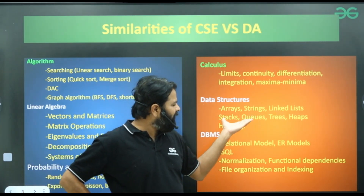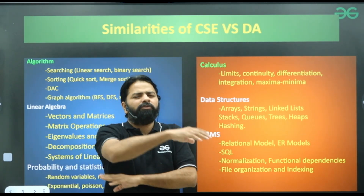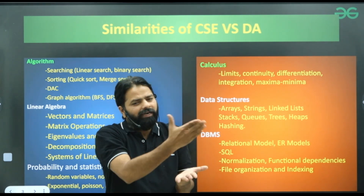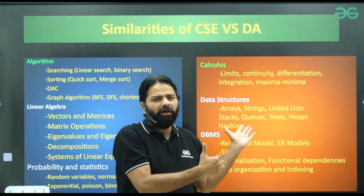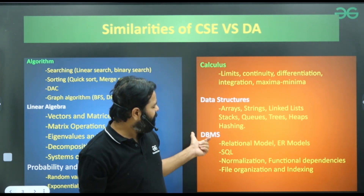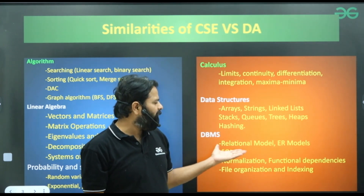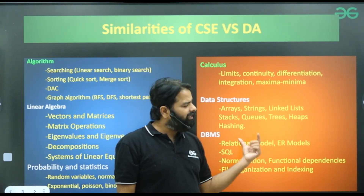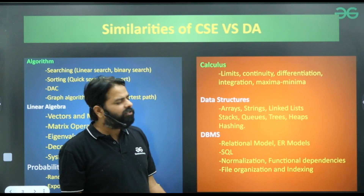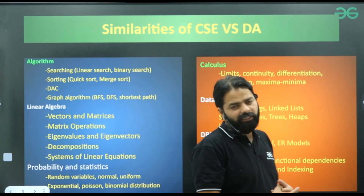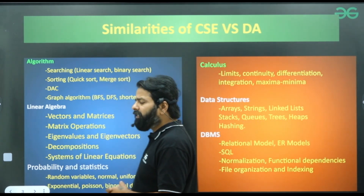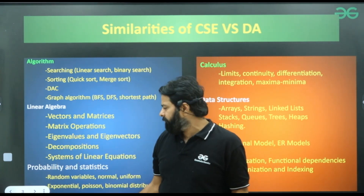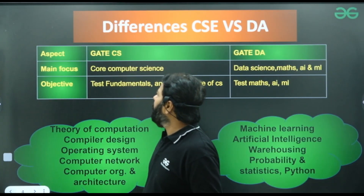Data structures are mostly the same — arrays, linked lists, stacks, queues, trees, heaps, and hashing concepts are in both. However, questions in DA may be asked using Python or algorithms, while in CS they use C programming or algorithmic concepts. DBMS is common in both: relational model, ER models, SQL, normalization, functional dependencies, file organization, and indexing — this portion gives weightage in both and saves preparation time.